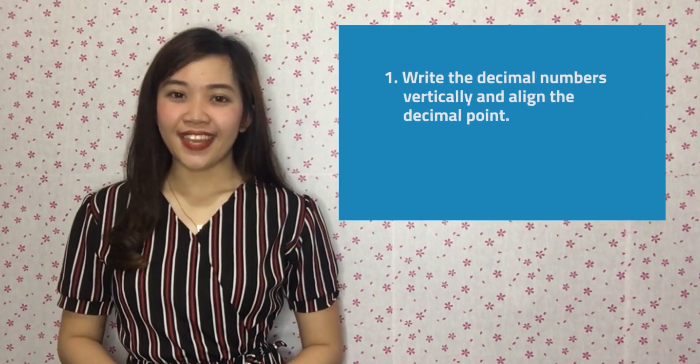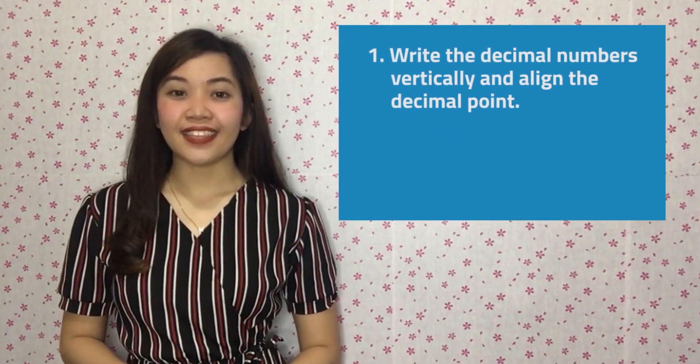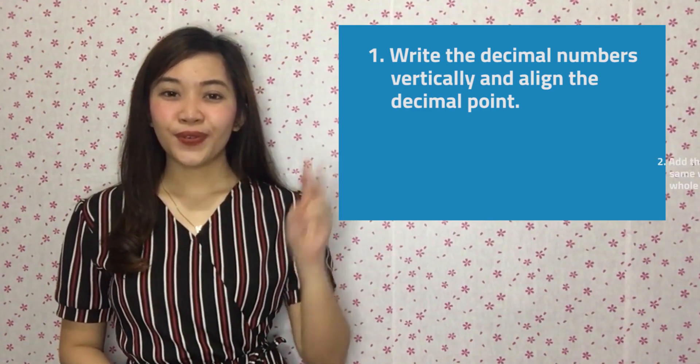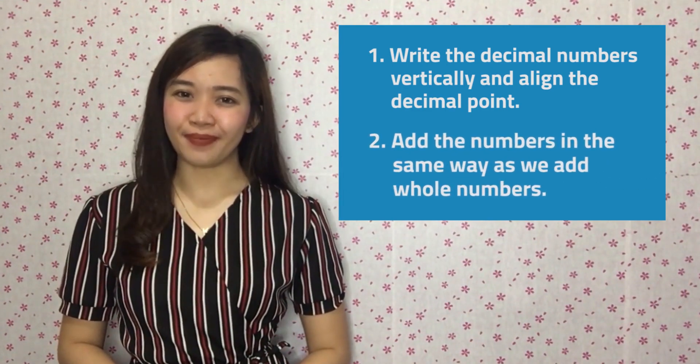You did great! Since we already know about decimals, we can now try solving addition problems involving them. Are you ready? Come on, let's go! Adding decimals is easy if you know how to align. It's basically like adding whole numbers, but this time with the decimal point. To add decimals, follow these steps: one, write the decimal numbers vertically and align the decimal point. Two, add in the same way as we add whole numbers.